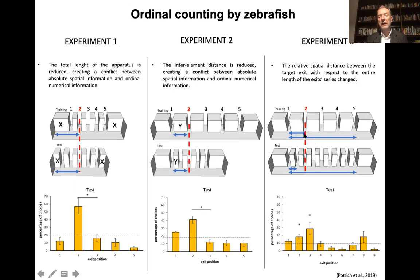Which is shown here. In this case the ratio between say the distance between the first and the second and the overall distance covering all the doors is changed at test in such a way that the correct proportion would identify in this case the third door, whereas the correct one at a different spatial distance is the second. And you can see that in this case fish fail.